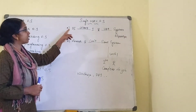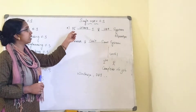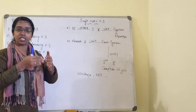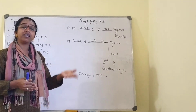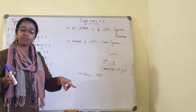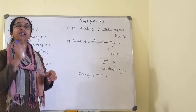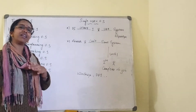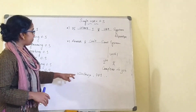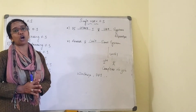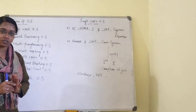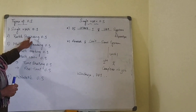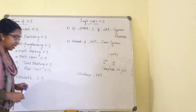So, the concept of the single user operating system: it allows only one user at a time to use a system or its system resources. Another user cannot use the same system until the first user completes their job. Examples are Windows as well as DOS. Next is the batch processing operating system.